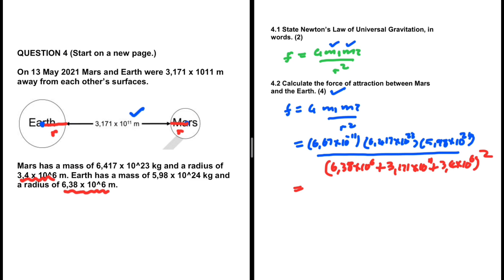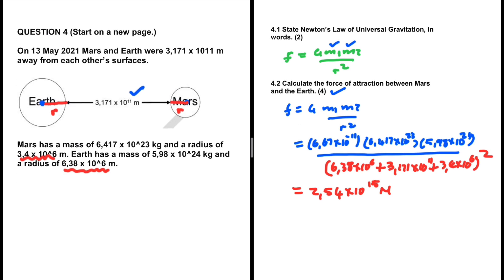Don't make that mistake — we need the distance between their centers, not the surface-to-surface distance. Also ensure that distance is in meters; if given in kilometers, convert first. Putting everything into the calculator, I am getting 2.54 times 10 to the power 15 Newtons. That is the force of attraction between Earth and Mars for problem 4.2.